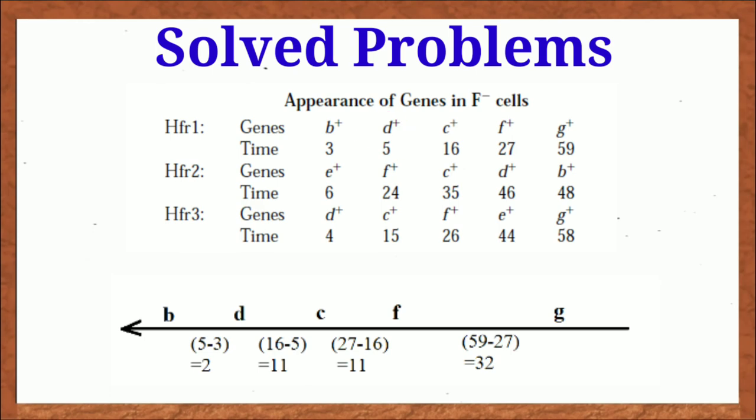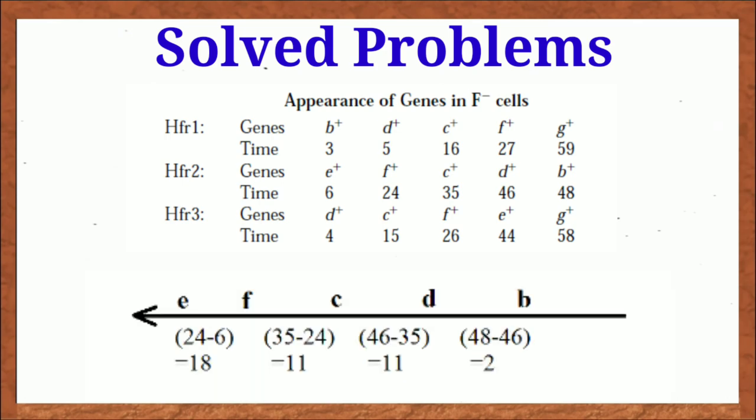Then gene D enters into the F minus. That means D is situated next to gene B. And from oriT, the distance of gene D is five minutes. So the distance between B and D is five minus three or two minutes. In this way, I have calculated the distance between each genes in all three cases.